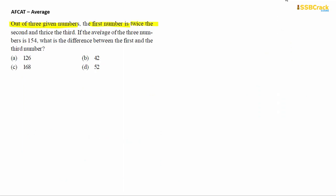Next question: Out of three given numbers, the first number is twice the second and thrice the third. If the average of the three numbers is 154, what is the difference between the first and the third number? The key here is that the first number can be expressed in terms of the second and third. If we call the three numbers X, Y, Z, then X = 2Y and X = 3Z.